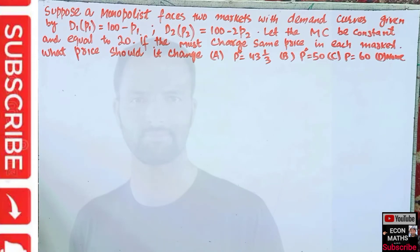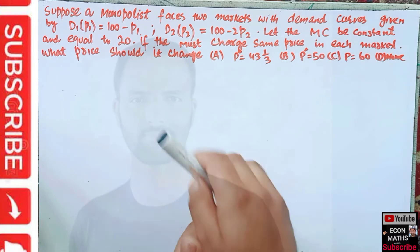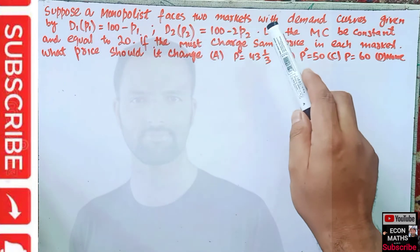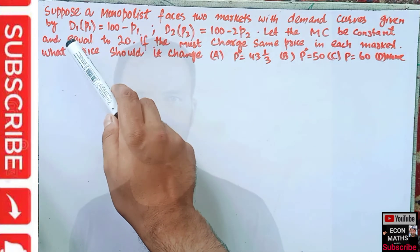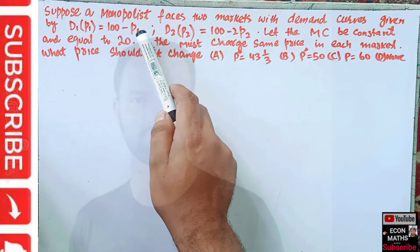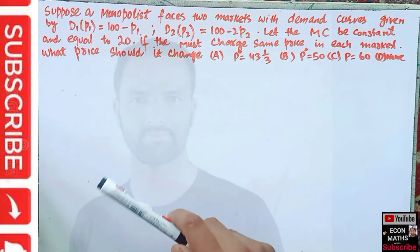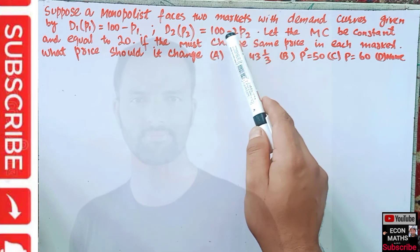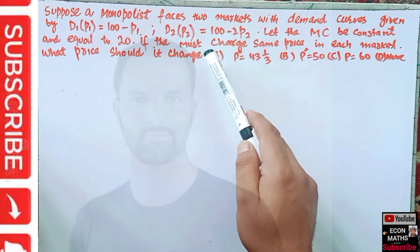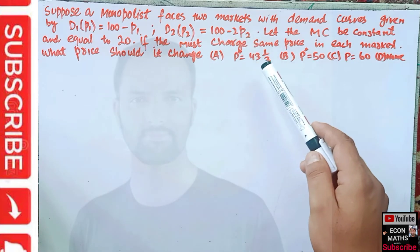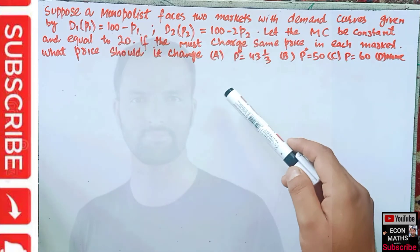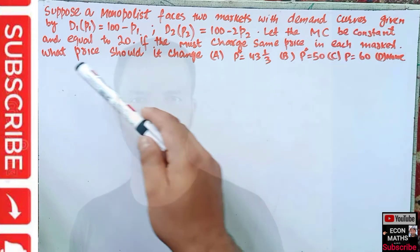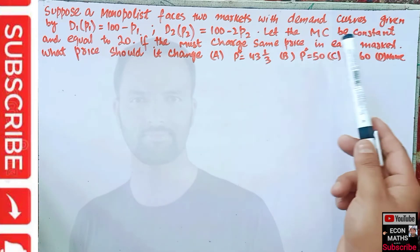Hi, this is Halal. In this video on the mathematical economics series, we will solve a problem on price discrimination. Suppose a monopolist faces two markets with demand curves given by D1(p1) = 100 - p1, the demand curve in the first market, and D2(p2) = 100 - 2p2, the demand curve in the second market, where p1 and p2 are prices in the first and second markets respectively. Let the marginal cost be constant and equal to 20.